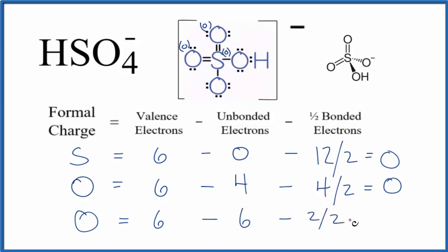So two over two—that gives us six minus six is zero minus one, a minus one formal charge on this oxygen.